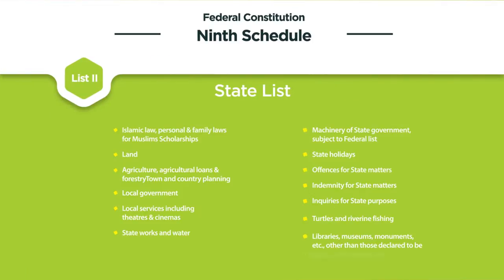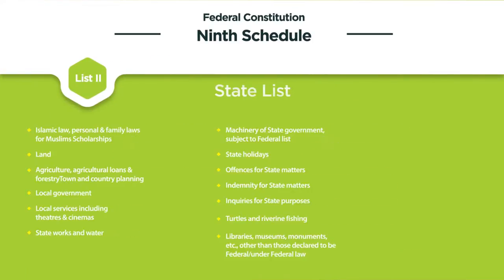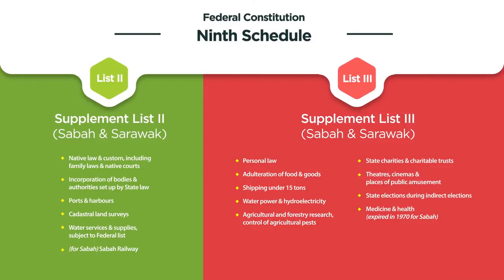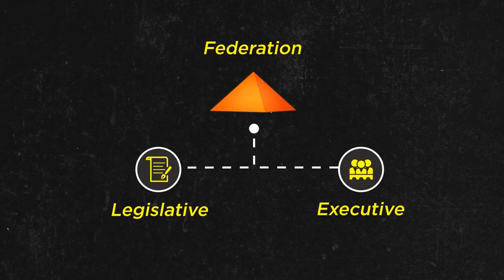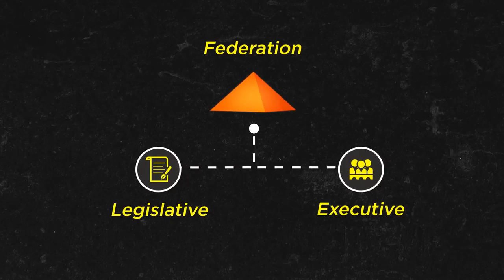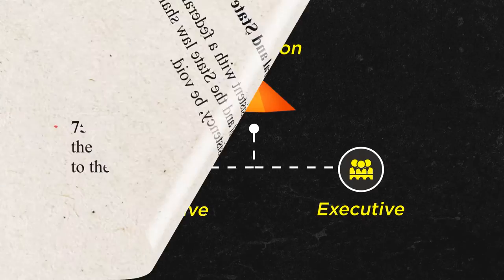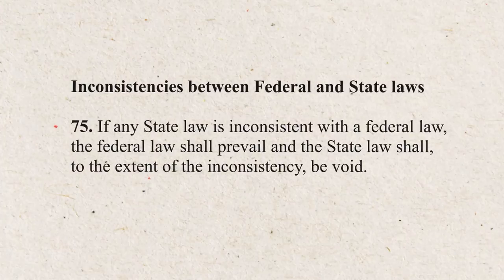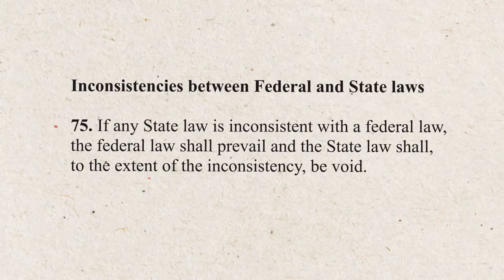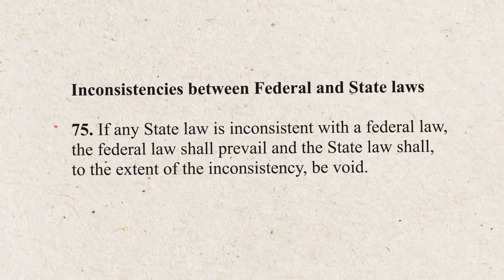The State List covers Islamic law, agriculture, as well as local government. While the Supplement List for Sabah and Sarawak covers native law, agriculture, forests, and other items that are particular to the two East Malaysian states. However, both the powers of the executive and legislative bodies tend to be vested in the Federation rather than the states. It is also stipulated within Article 75 that federal law will always take precedence and override inconsistencies between state and federal laws.